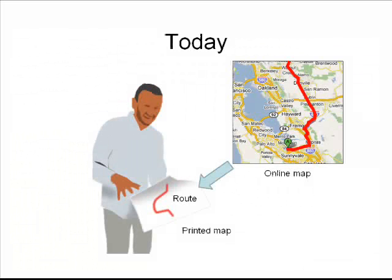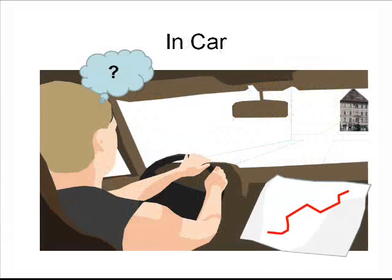Getting a map of directions from a starting point to some destination is a simple matter with various web mapping services. We can print out the map and textual description of the route, but still, when we're actually driving, it's hard to match the abstraction of the map and text to what we see in front of us.